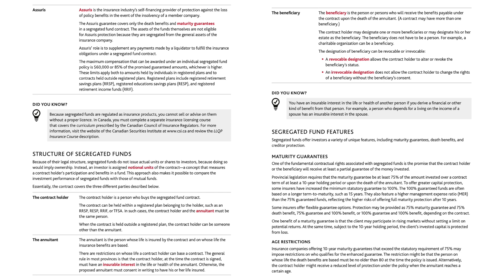Age restrictions. Insurance companies offering 10-year maturity guarantees that exceed the statutory requirement of 75% may impose restrictions on who qualifies for the enhanced guarantee. The restriction might be that the person on whose life the death benefits are based must be no older than 80 at the time the policy is issued. Alternatively, the contract holder might receive a reduced level of protection under the policy when the annuitant reaches a certain age.